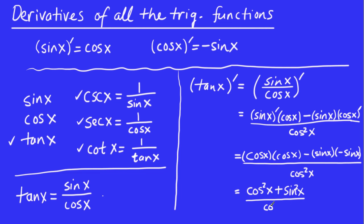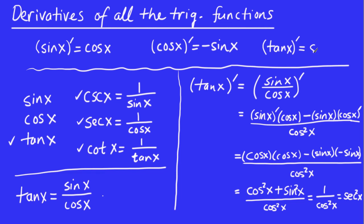That's all over cos squared x. Using the fundamental trig identity, sine squared plus cosine squared equals one, so the numerator becomes one. And one over cos squared x — since secant x is one over cos x, squaring both sides gives one over cos squared x equals secant squared x. So the derivative of tan x is secant squared x.